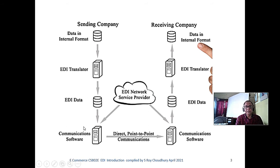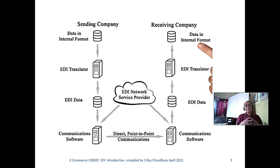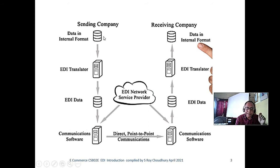The EDI data goes over the X.25 network to the receiving company. Remember, it is not like email — though you may think it is like email, it is not. Because with email, if I know your address I can send you a message. But here, I have to know which messages I am authorized to send. All these standards have to be maintained by the VAN.